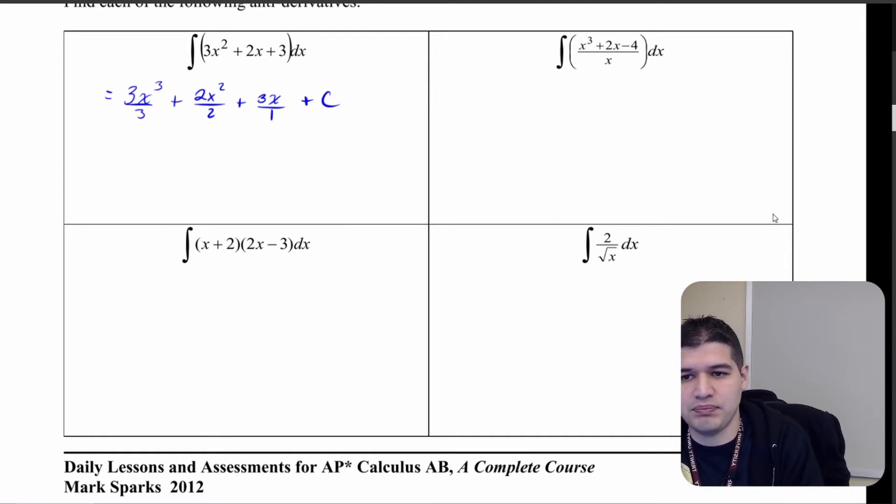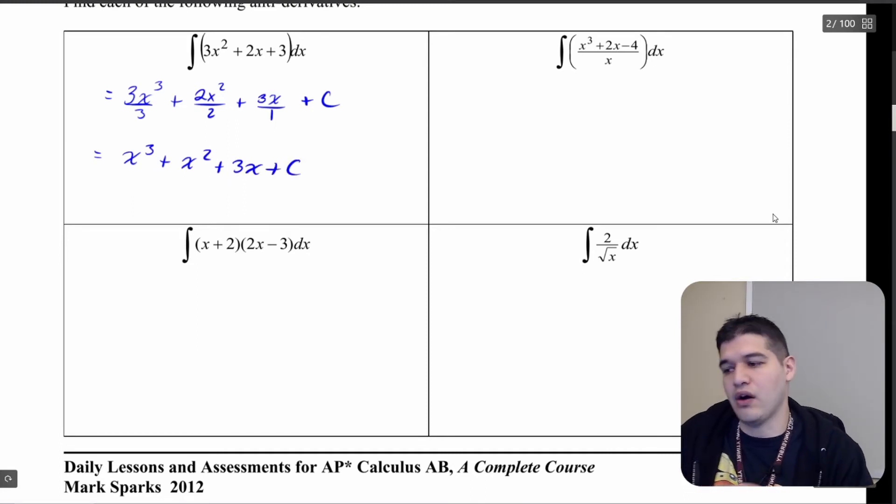Now it's just about cleaning up some of this. 3 divided by 3 is going to get me x cubed, and then plus x squared plus 3x plus C. That is going to be our result.